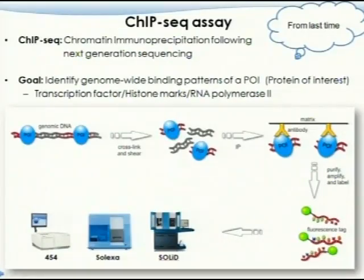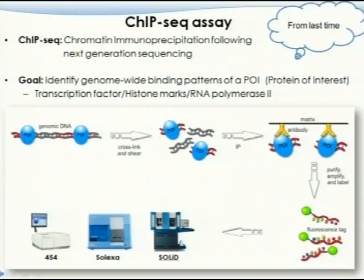A brief overview of what we talked about last time: ChIP-seq stands for chromatin immunoprecipitation following next-generation sequencing. The goal is to identify genome-wide binding patterns of a protein of interest — that protein can be a transcription factor, a histone mark, or RNA polymerase. These steps are important because we will use this information when we discuss algorithms to identify binding sites.